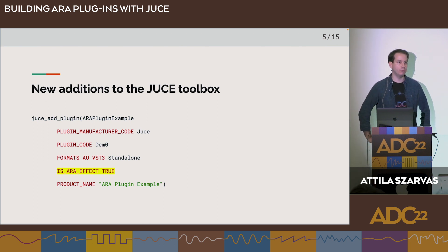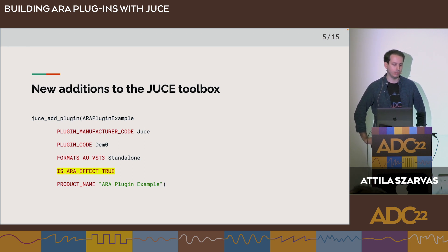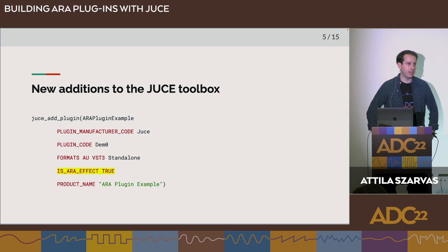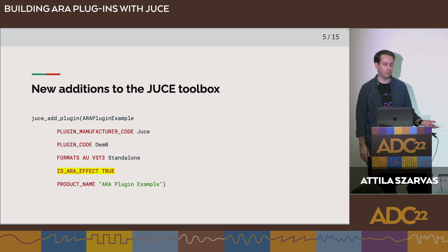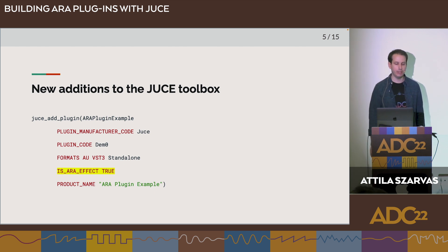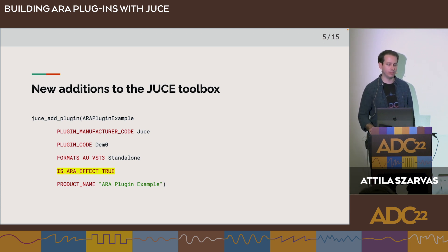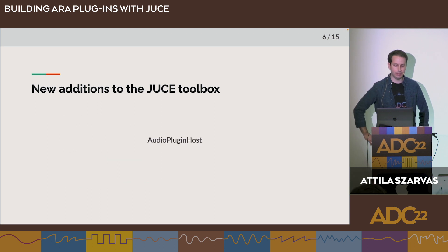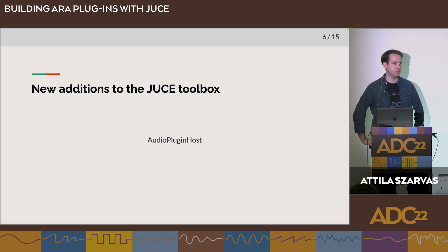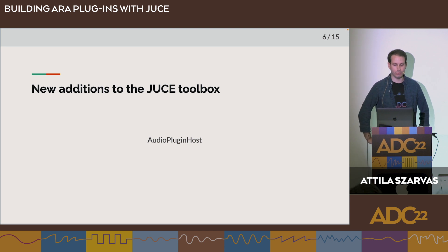A CMake ERA plugin project will look almost exactly like a basic audio plugin project. An ERA plugin project is also going to be an Audio Unit or VST3 plugin project, but it has access to another set of APIs. In CMake, you need to use the is_ERA_effect true parameter in the JUCE add_plugin command. We have also added support to the audio plugin host so you can quickly try out your ERA plugins.